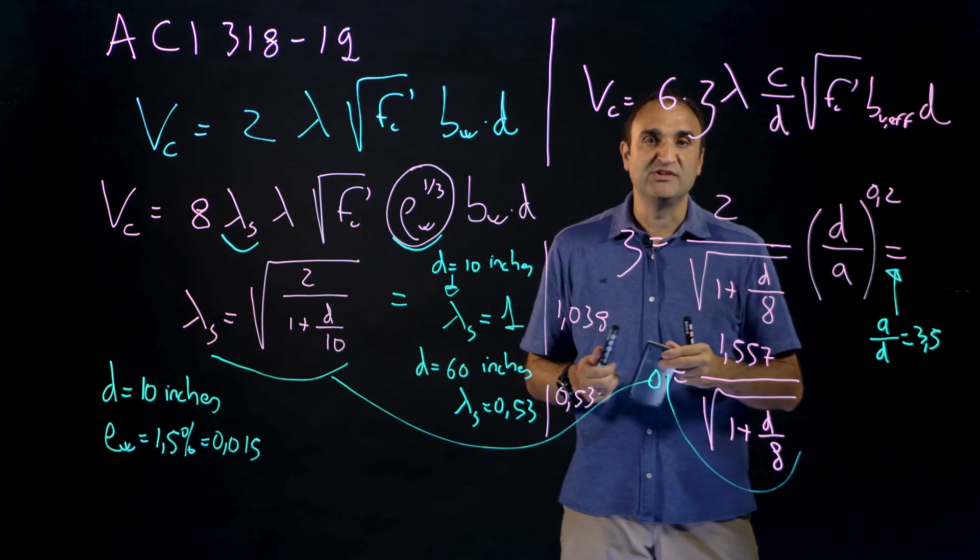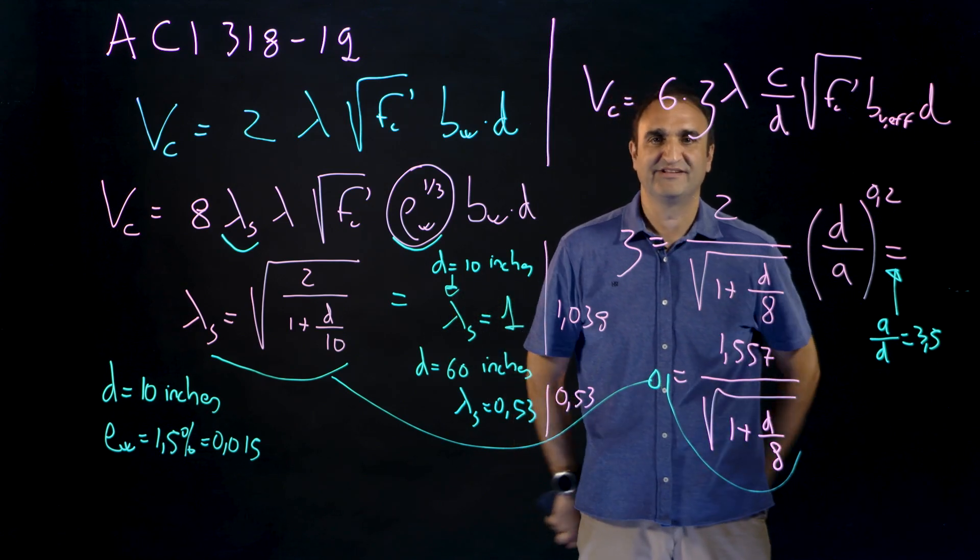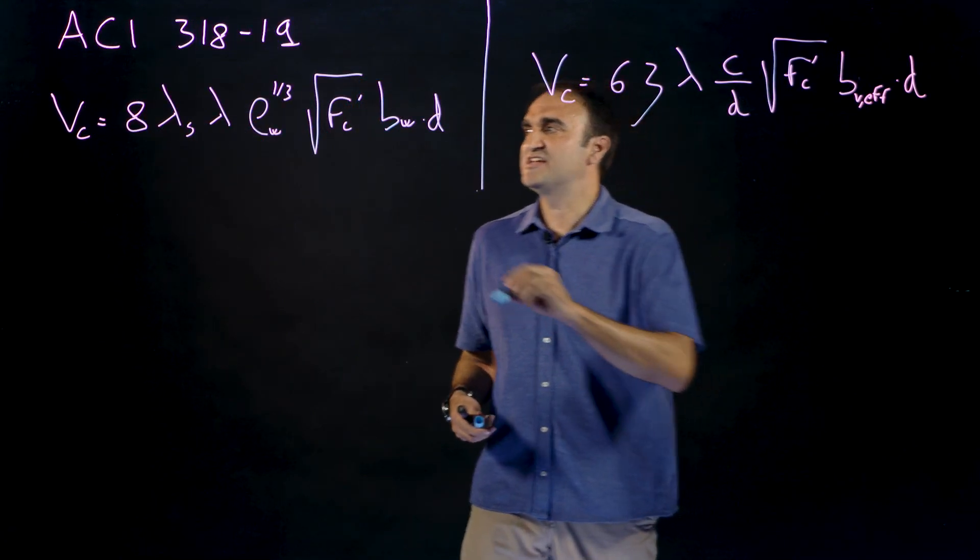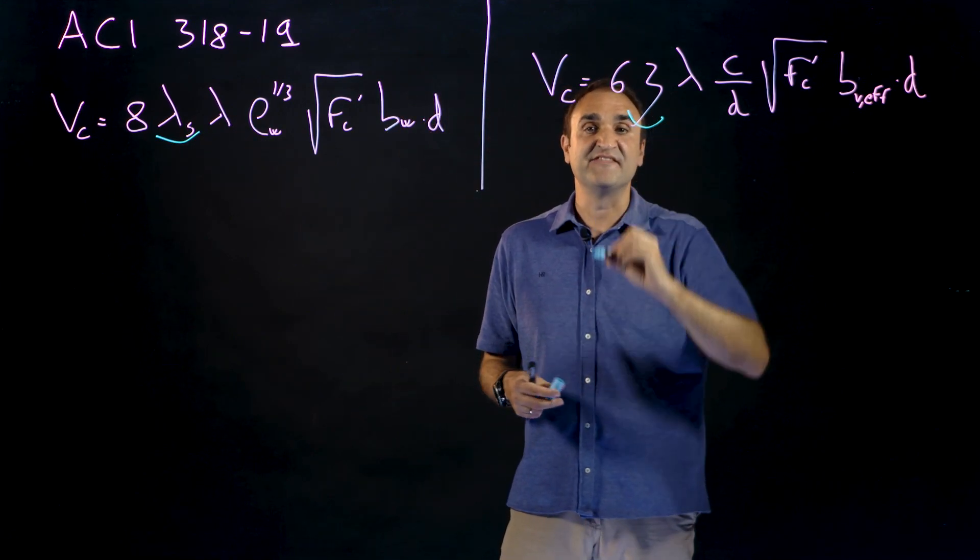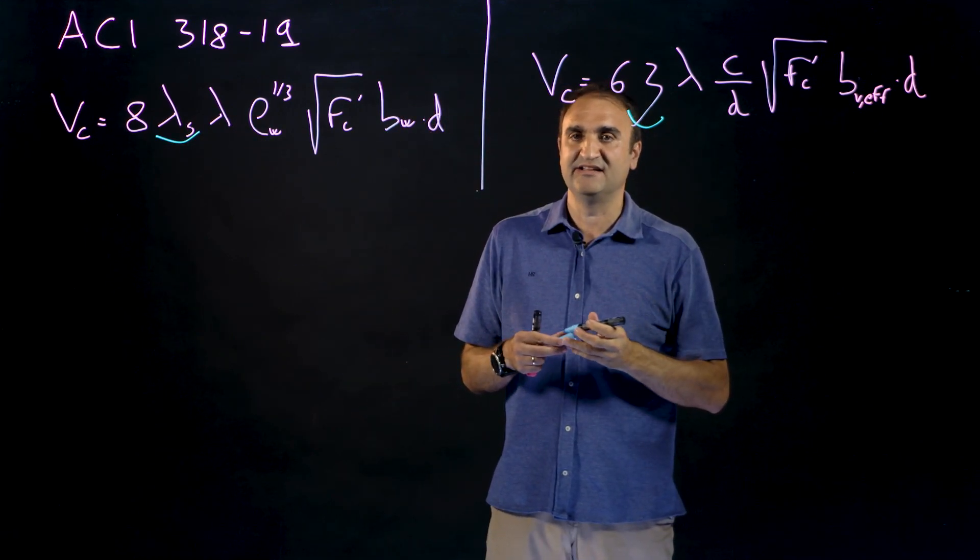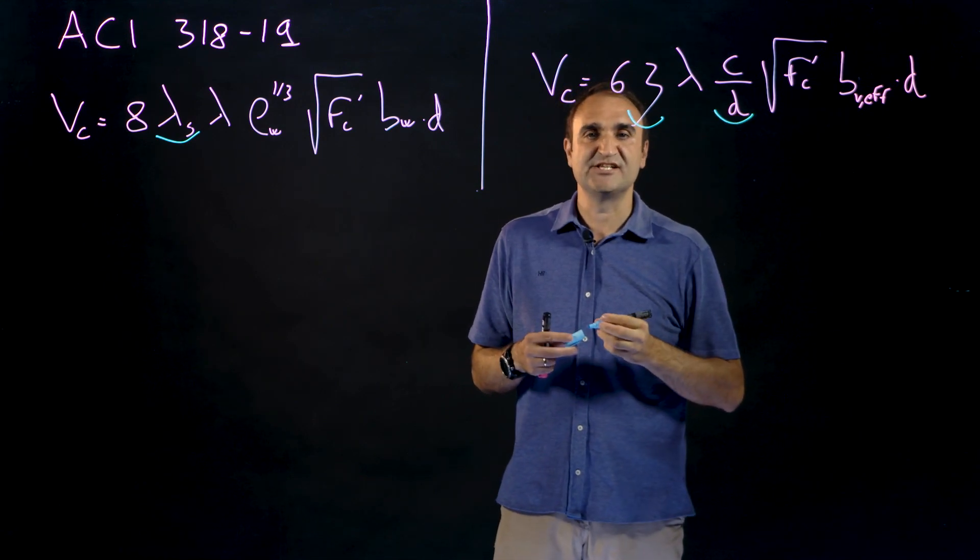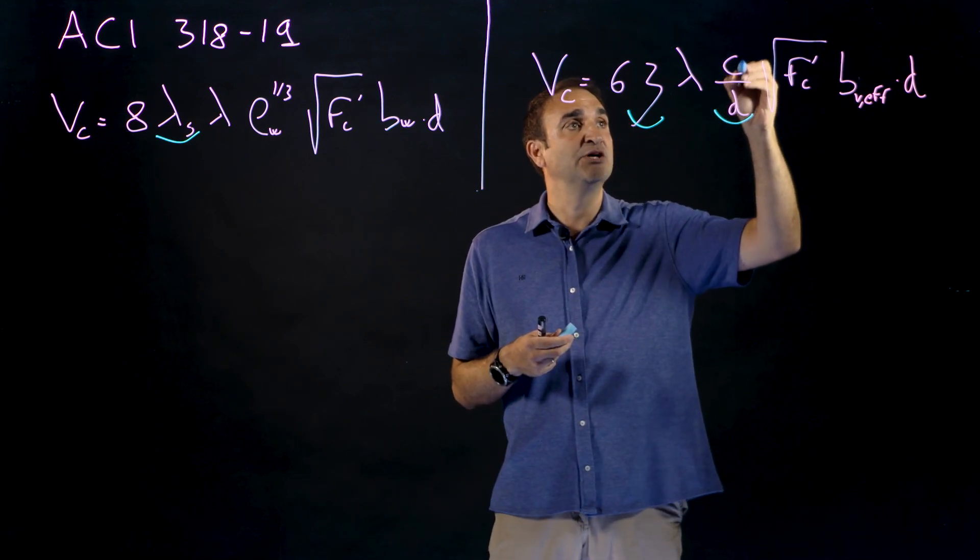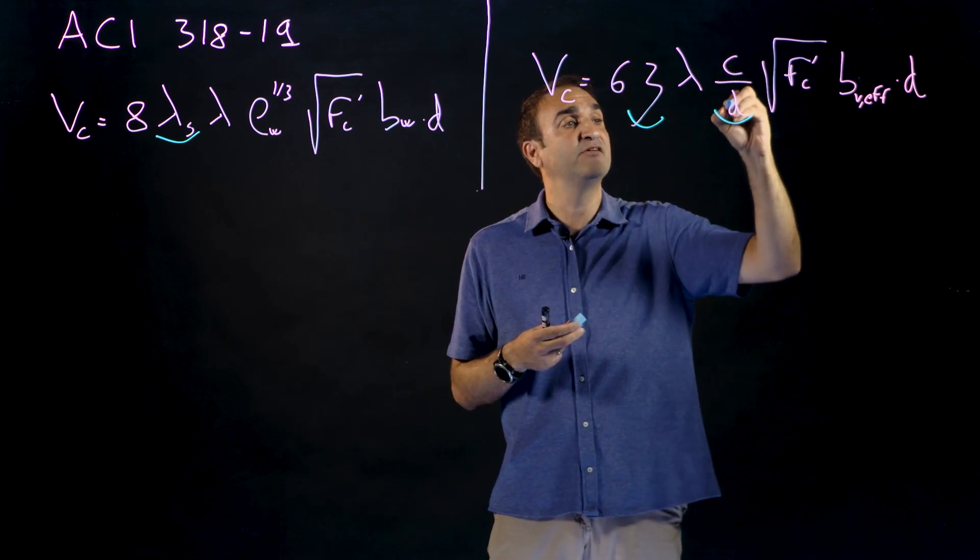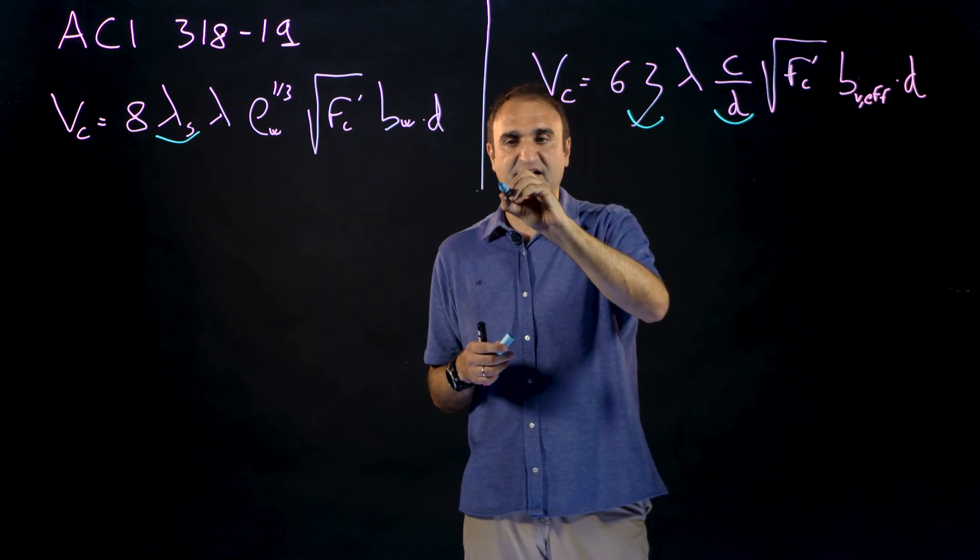I am going to explain you the effect of c over d in the next blackboard. So we have just seen that this size effect factor and this size and slenderness factor are practically the same and then I have to explain you what is c over d. This is the relative neutral axis depth or the neutral axis depth over the effective depth.